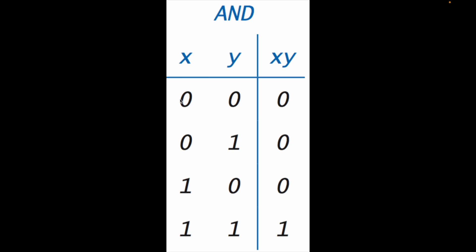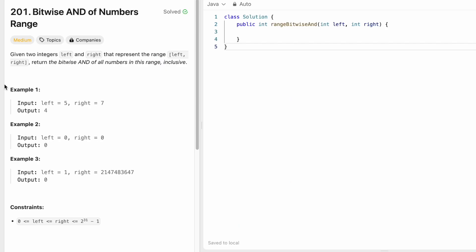Coming to the AND operator's logic table: if you take X AND Y, only when both X and Y are one, the output is one. If either of them is zero it will be zero, and obviously zero AND zero gives you zero.